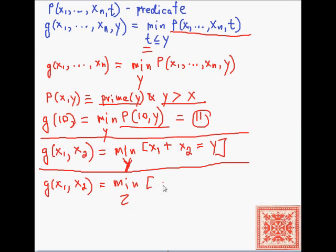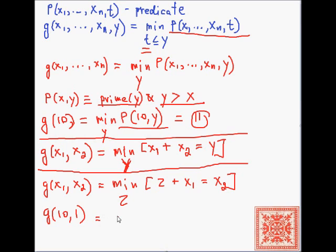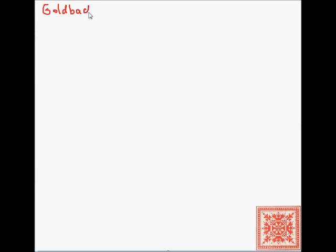Here's another example. We're looking for the minimum value of z, minimal z, such that z plus x1 is equal to x2. If we call this g with 10 and 1, then we're looking for minimal z such that z plus 10 is equal to 1. And there is no such z. There's no natural number z that satisfies that equality. So this is undefined.